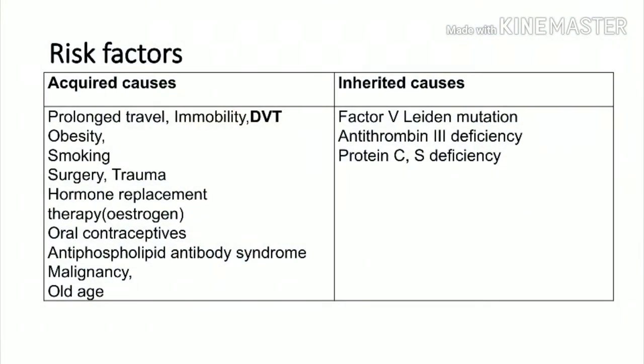The risk factors for pulmonary embolism are the same as for DVT. Inherited causes include Factor V Leiden mutation, antithrombin 3 deficiency, and protein C and protein S deficiency. Major acquired causes include prolonged travel, immobility such as ICU admission, history of DVT, obesity, smoking, previous surgery, trauma, hormone replacement therapy, oral contraceptives, antiphospholipid antibody syndrome, malignancies, and old age.